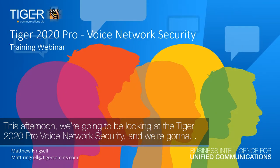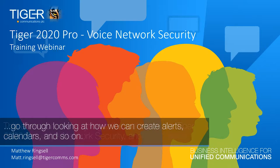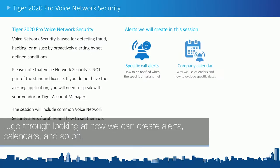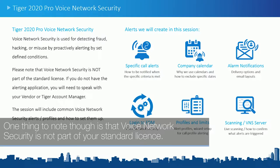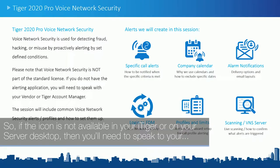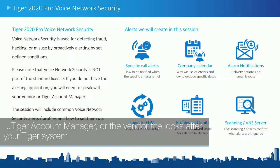This afternoon we're going to be looking at the Tiger 2020 Pro Voice Network Security, and we're going to look at how we can create alerts, calendars and so on. Voice Network Security is used for detecting fraud, hacking, misuse, or proactively alerting by a set of defined conditions. One thing to note is that Voice Network Security is not part of your standard license, so if the icon is not available in your iTiger or on your server desktop, you'll need to speak to your Tiger account manager or the vendor that looks after your Tiger system.